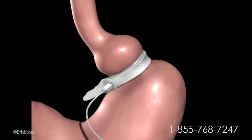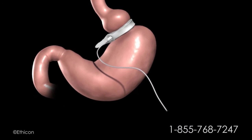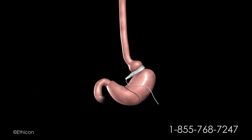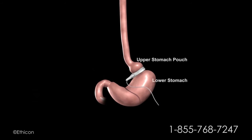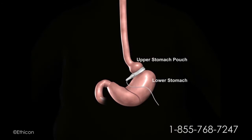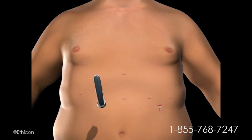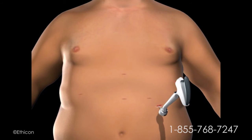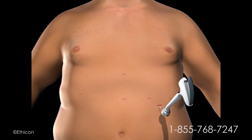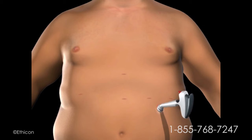A tube attached to the band will be connected to the injection port. The port is used to adjust the band tightness after surgery. An incision is made on the upper abdomen to insert the injection port beneath the skin. The tube is secured using the locking connector on the port, and both the injection port and tube are placed beneath the skin.